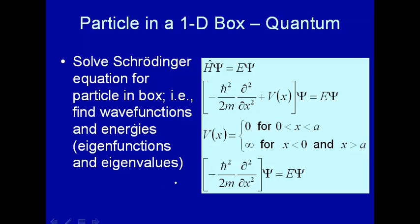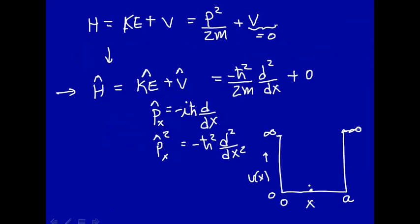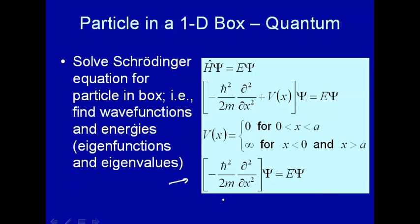So if we now look at just the operator for the particle, and now the particle is constrained to be in this box, it can't go outside the box, then we say that this kinetic energy operator will operate just inside the box from zero to a, and therefore we get this for the Schrödinger equation.